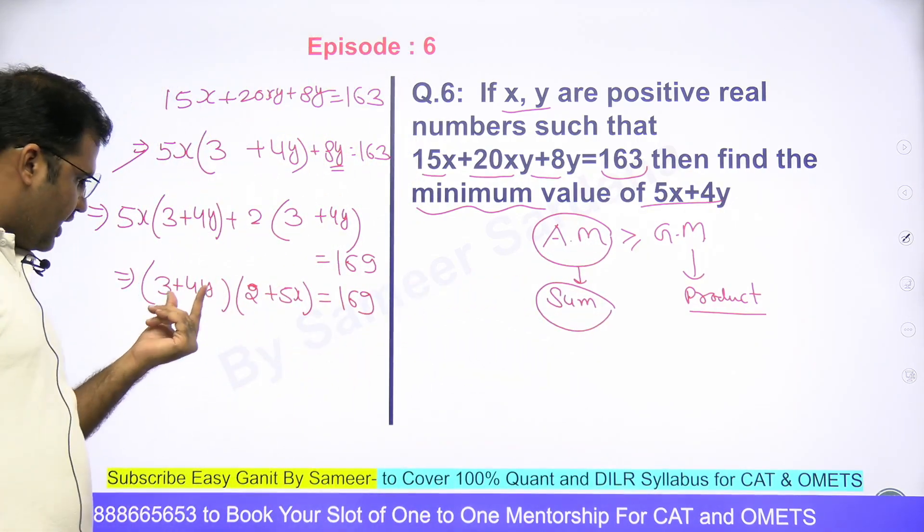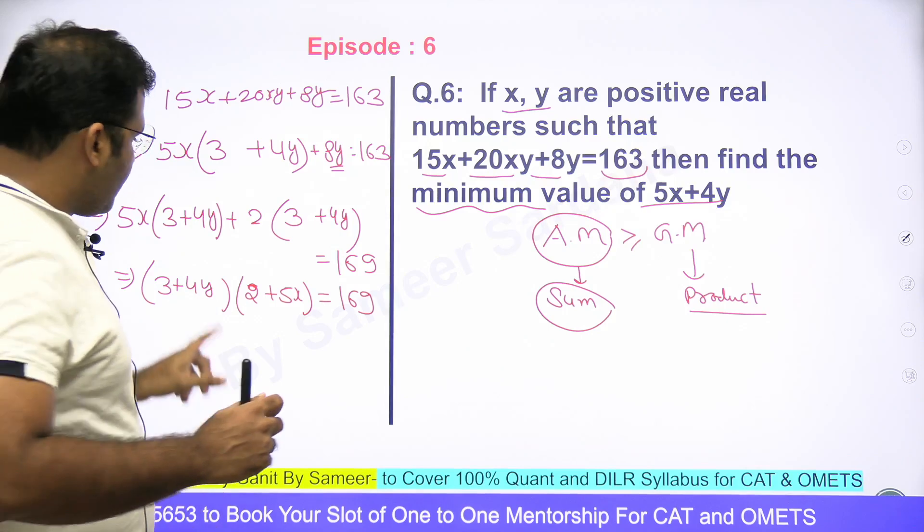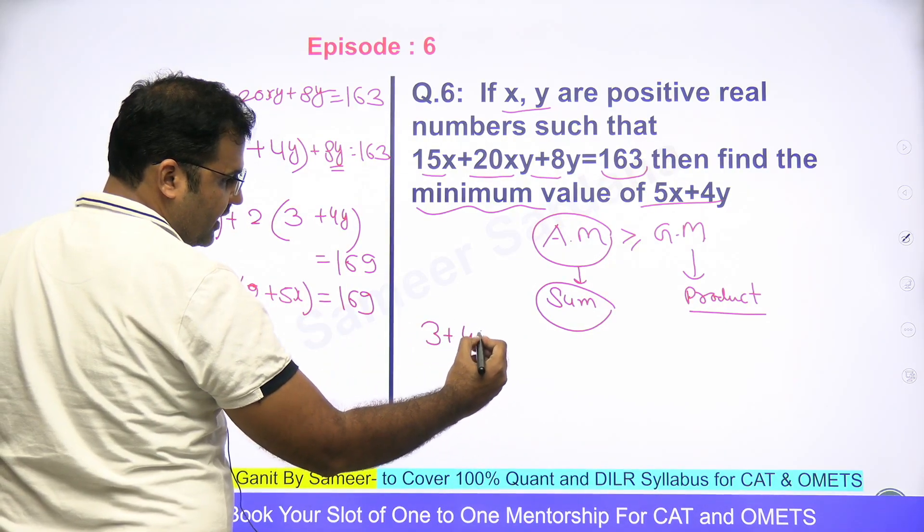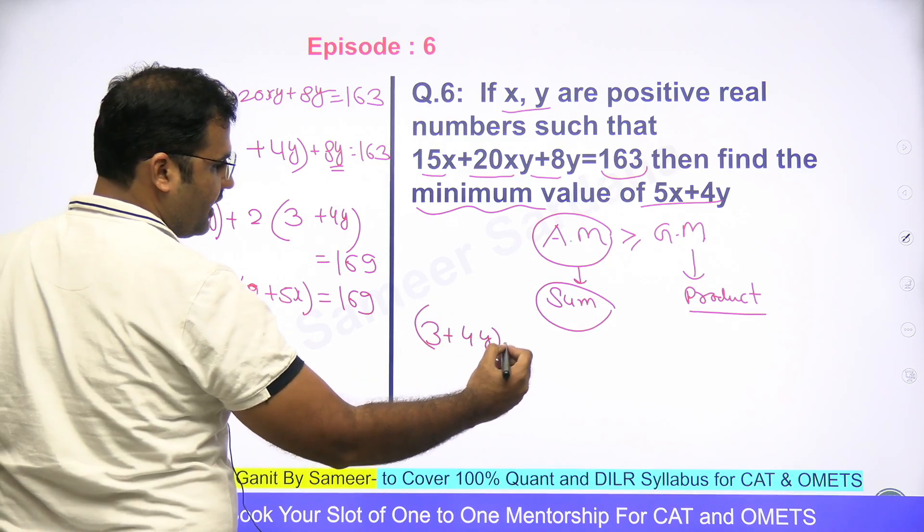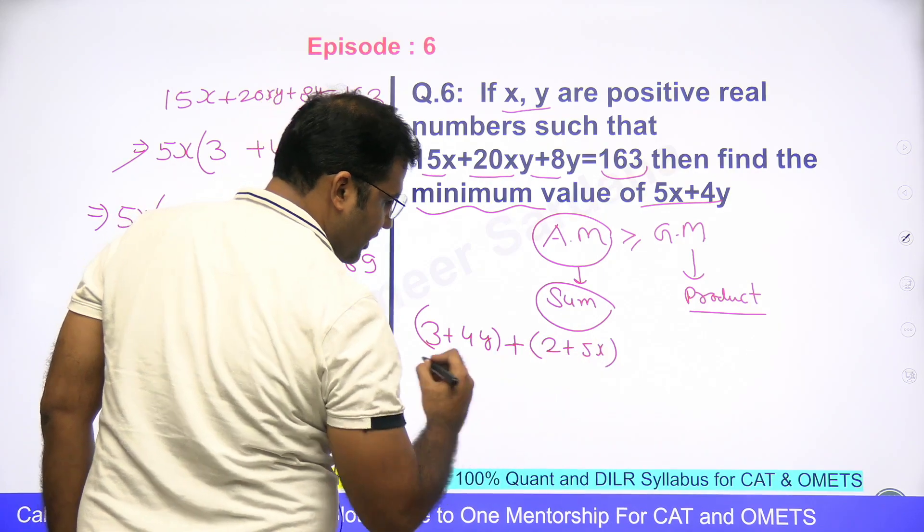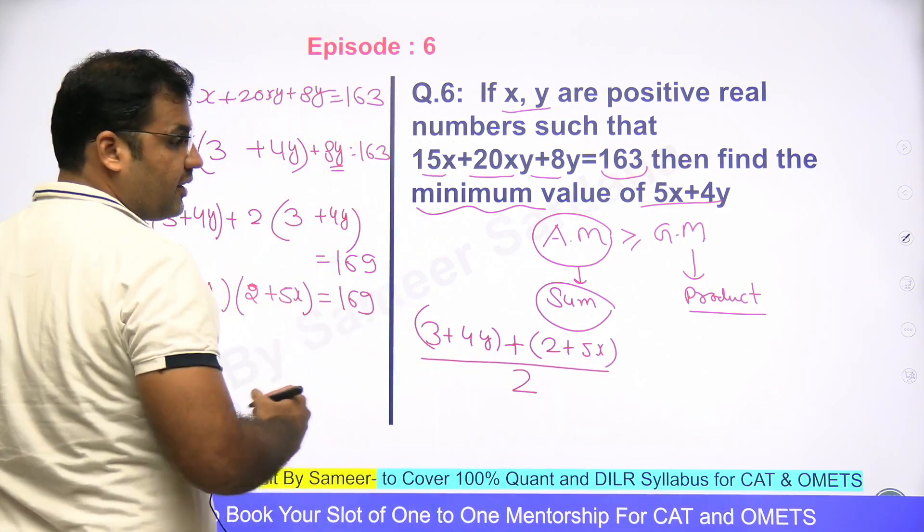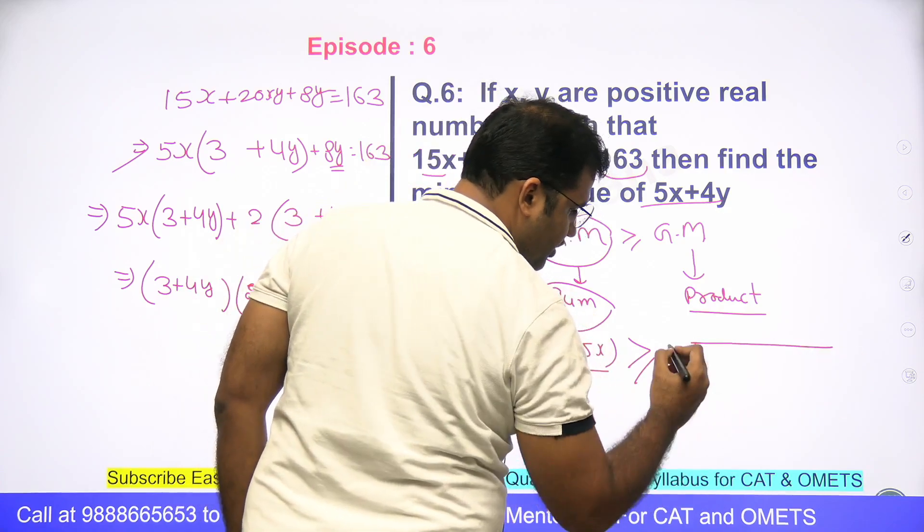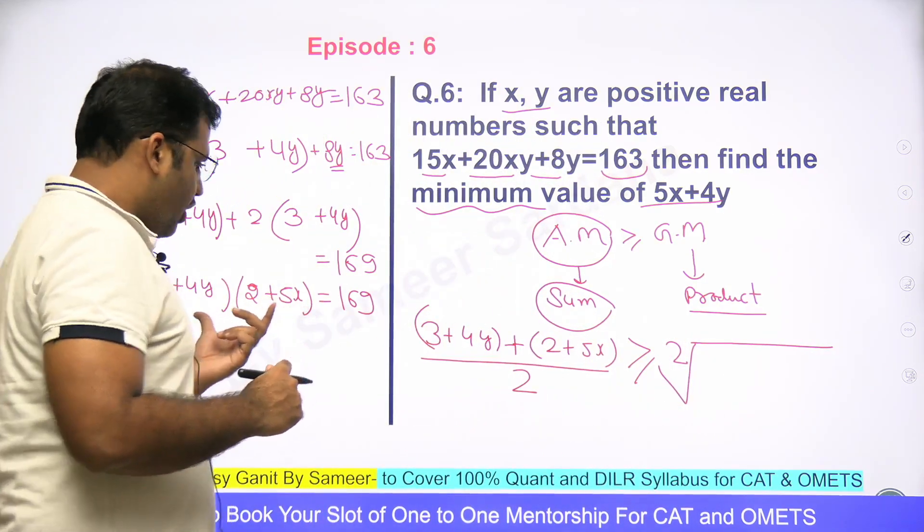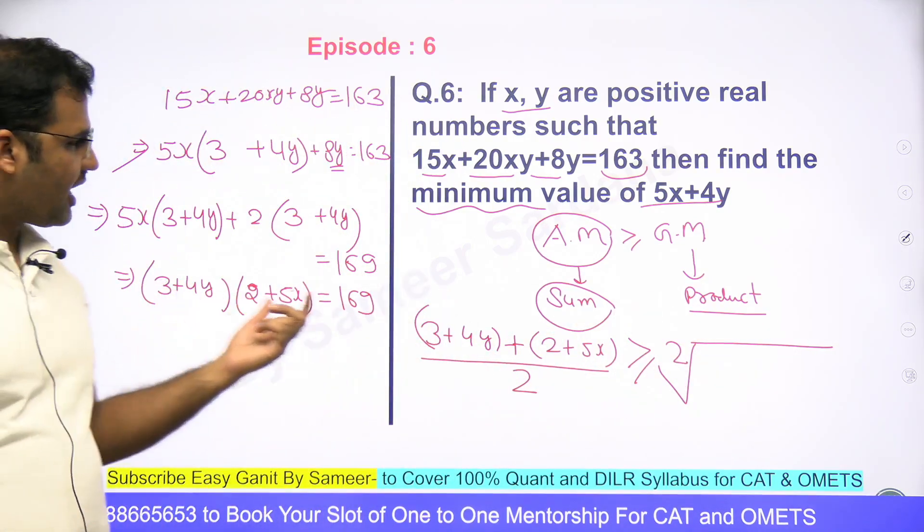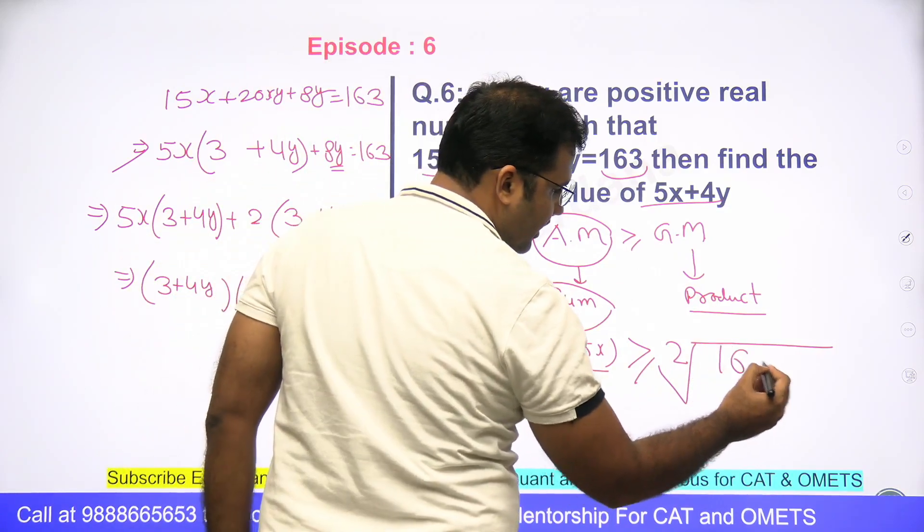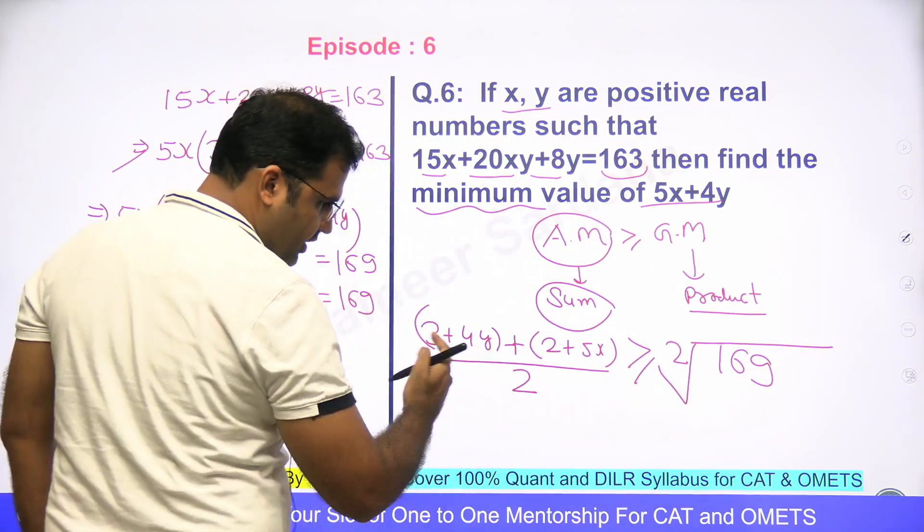All we have to do now is ki hume yeh do brackets ka product pata hai. So if I take the arithmetic mean, do terms maine liye, ek term 3+4y, another term is 2+5x. Yeh do bracket ka arithmetic mean agar main loon, this arithmetic mean will be greater than equal to geometric mean. Geometric mean, two terms hain, toh square root lena padega of the product of these two. Yeh dono values ka product yahan pe aayega, toh I can straight away write it down as 169. Now 169 ka square root would be 13.